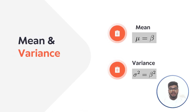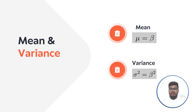Next, we discuss the mean and variance of the exponential distribution. The mean is given by mu = beta, and the variance formula is sigma squared = beta squared. So the mean equals beta and the variance equals beta squared.